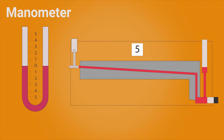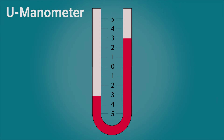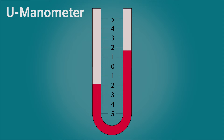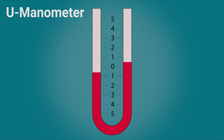Another instrument used in this lab is the manometer, a device that indicates the pressure difference between two points by the offsetting height of a liquid. The U-manometer shown here is one of the simplest manometers. On this device, it usually doesn't matter which side is connected to the higher pressure point. However, when calculating the pressure difference, the total distance between the left and right liquid levels must be used, which is usually double the reading on the built-in ruler.